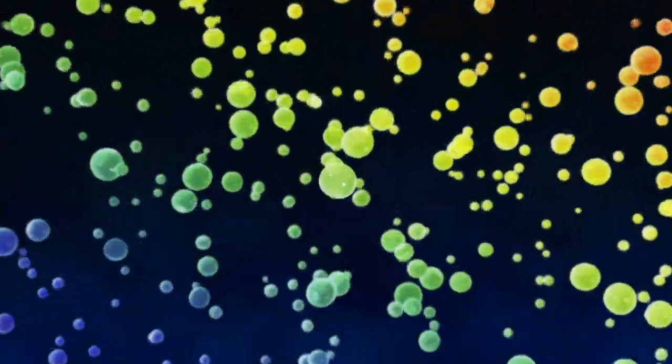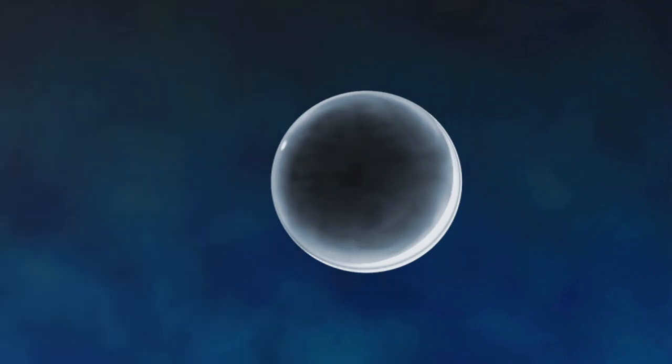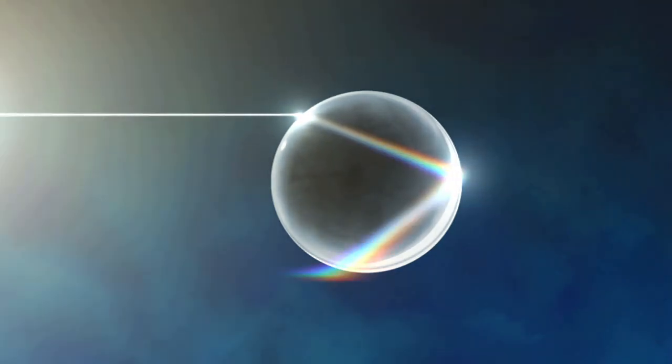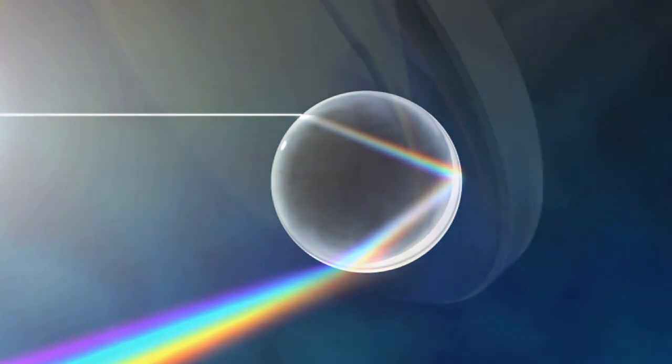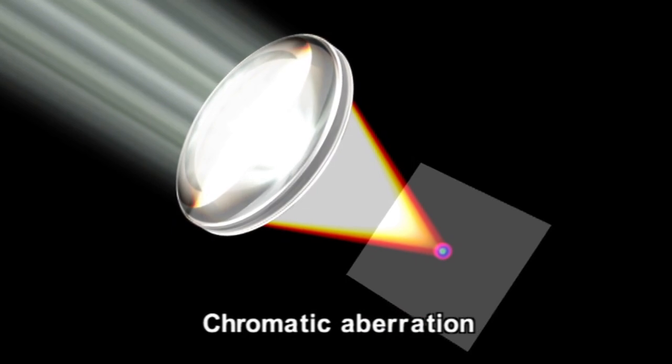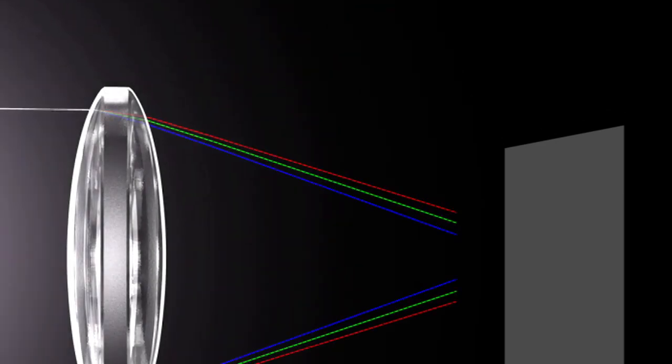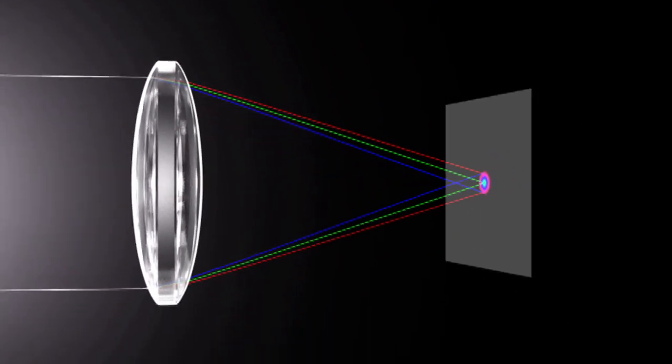There is also the problem of chromatic aberration. A rainbow is formed when light passing through water droplets is refracted. Different refraction wavelengths cause the different colors of the rainbow. This same principle causes chromatic aberration in lenses. The focal point for blue light, which has a short wavelength, is closer than that for red light, which has a long wavelength. This causes the colors to bleed.